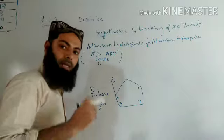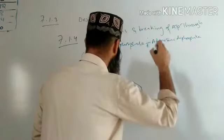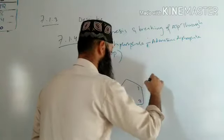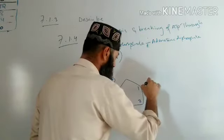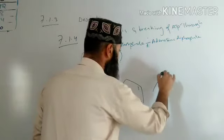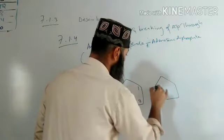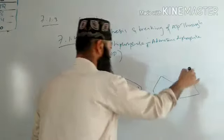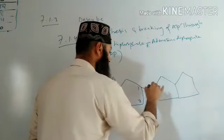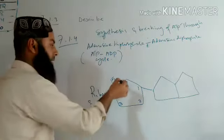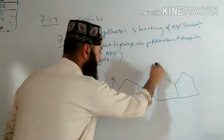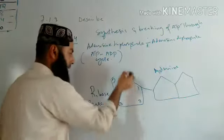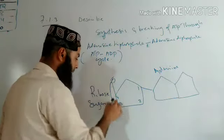Here we have ribose sugar and adenosine. Adenosine is a nucleotide base of DNA. So we have adenosine attached to ribose sugar.